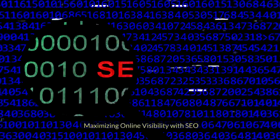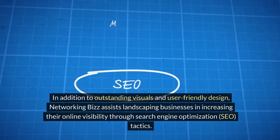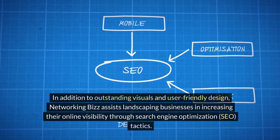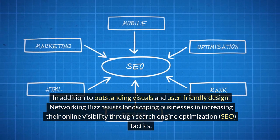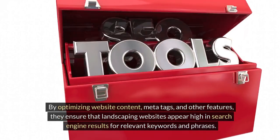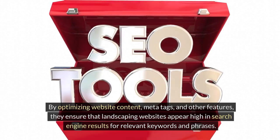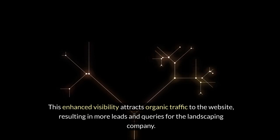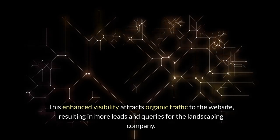Maximizing online visibility with SEO: in addition to outstanding visuals and user-friendly design, Networking Biz assists landscaping businesses in increasing their online visibility through search engine optimization (SEO) tactics. By optimizing website content, meta tags, and other features, they ensure that landscaping websites appear high in search engine results for relevant keywords and phrases. This enhanced visibility attracts organic traffic to the website, resulting in more leads and queries for the landscaping company.